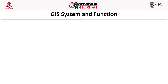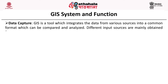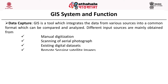Coming first to the GIS system and function, the first one is data capture. GIS is a tool which integrates data from various sources into a common format which can be compared and analyzed. The different input sources are mainly obtained from manual digitization, scanning of aerial photographs, existing digital data sets, remote sensing based satellite images and the global positioning system.